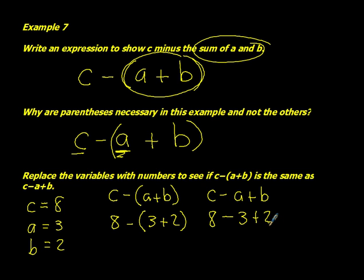So we'll see what happens when we solve these. In this first one, we need to do the sum in parentheses, and then 8 minus 5 is 3. And on this side, we have 8 minus 3 is 5 plus 2. So we'll do this first. Plus 2 is 7. And we can see that 3 is not equal to 7. So yeah, those parentheses are pretty important when solving a problem like this.